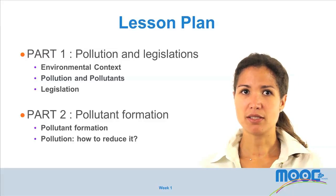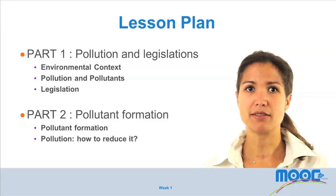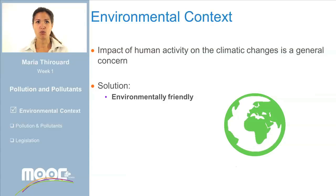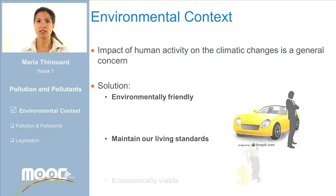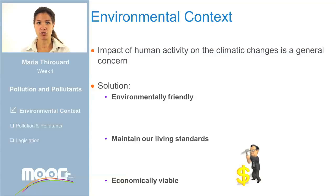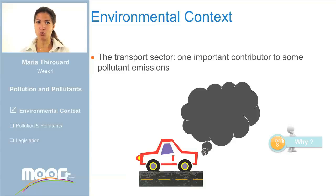In the second part we will discuss pollutant formation and give more details about pollution. We are constantly receiving information about climatic changes. The impact of human activities on these changes is a general concern, but the equation is not easy to solve. We would like to reduce the impact we have on the planet without dramatically changing our living standards. And, of course, as you have seen in the previous lessons, it is impossible to forget the economic factor, which will be the driving force of the final solution. The transport sector is one of the main sectors contributing to certain pollutant emissions, but to understand why, we need to look at how the pollutants are produced in thermal engines.